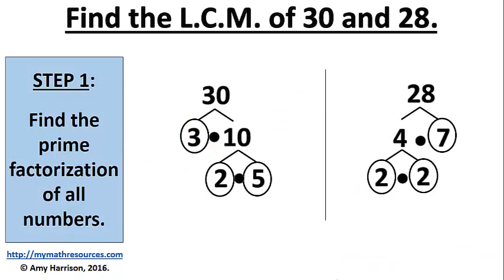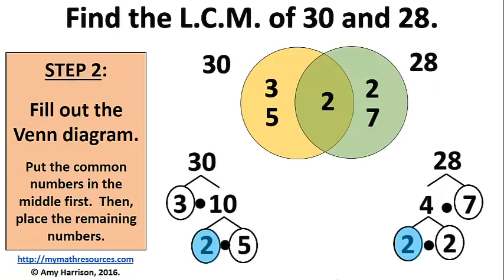Next, let's find the least common multiple of 30 and 28. As you can see, the first step is identical. We find the prime factorizations of both numbers. The second step is also the same. We fill out our Venn diagram.